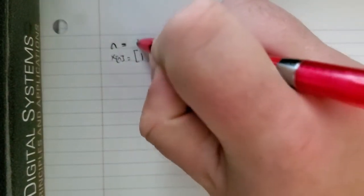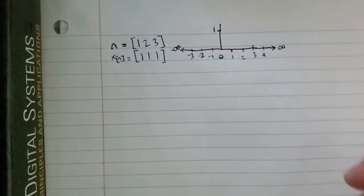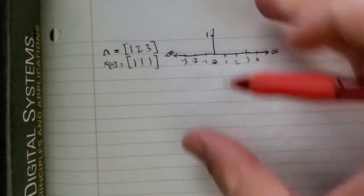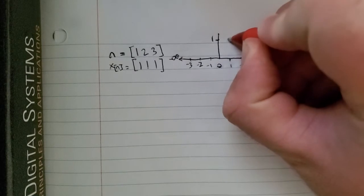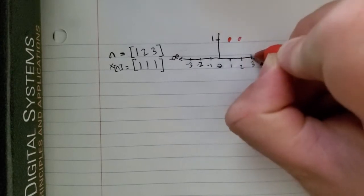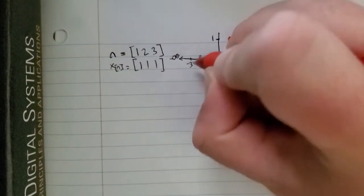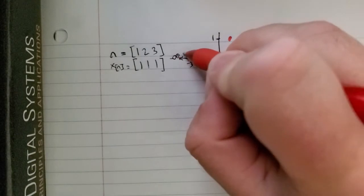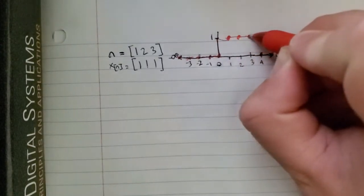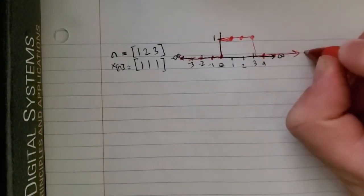So if we have this sequence here: n equals 1, 2, 3, x[n] is equal to 1, 1, 1, and then 0 everywhere else. If we graph that, x[n] equals 1 at n equals 1, n equals 2, and n equals 3, and 0 everywhere else, all the way back to negative infinity. So in continuous time it would look something like that, with a straight line all the way out to infinity and negative infinity.